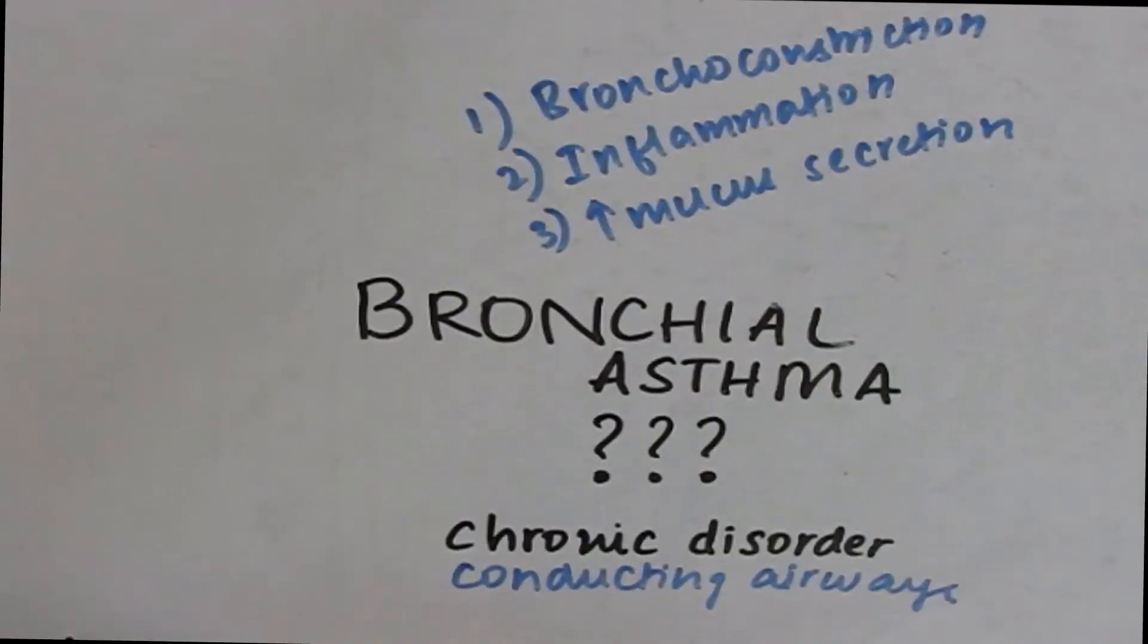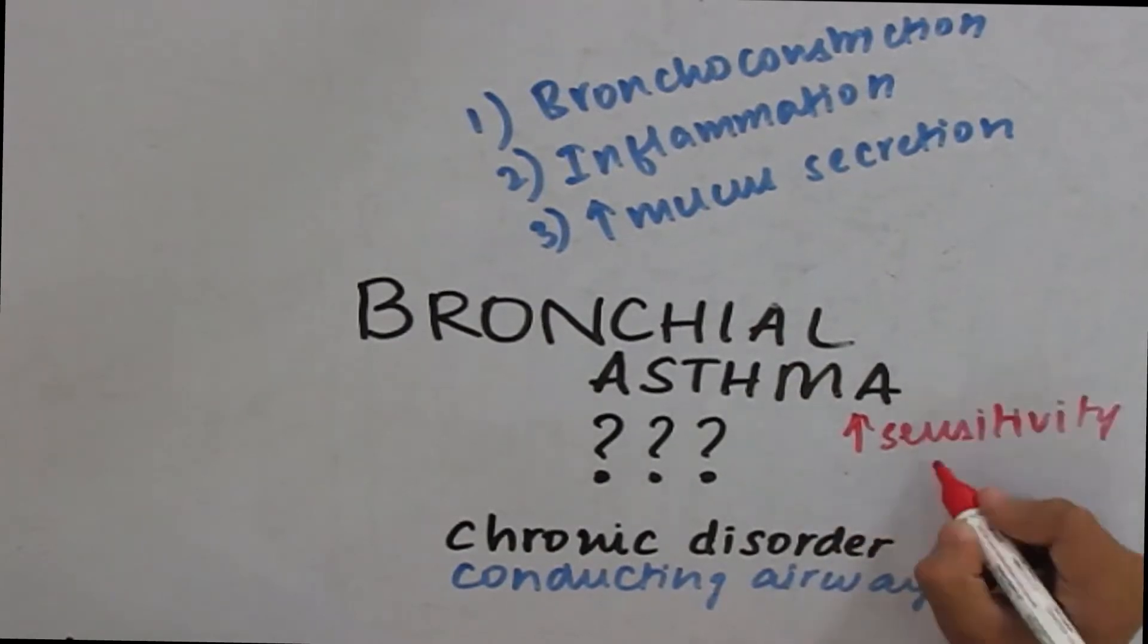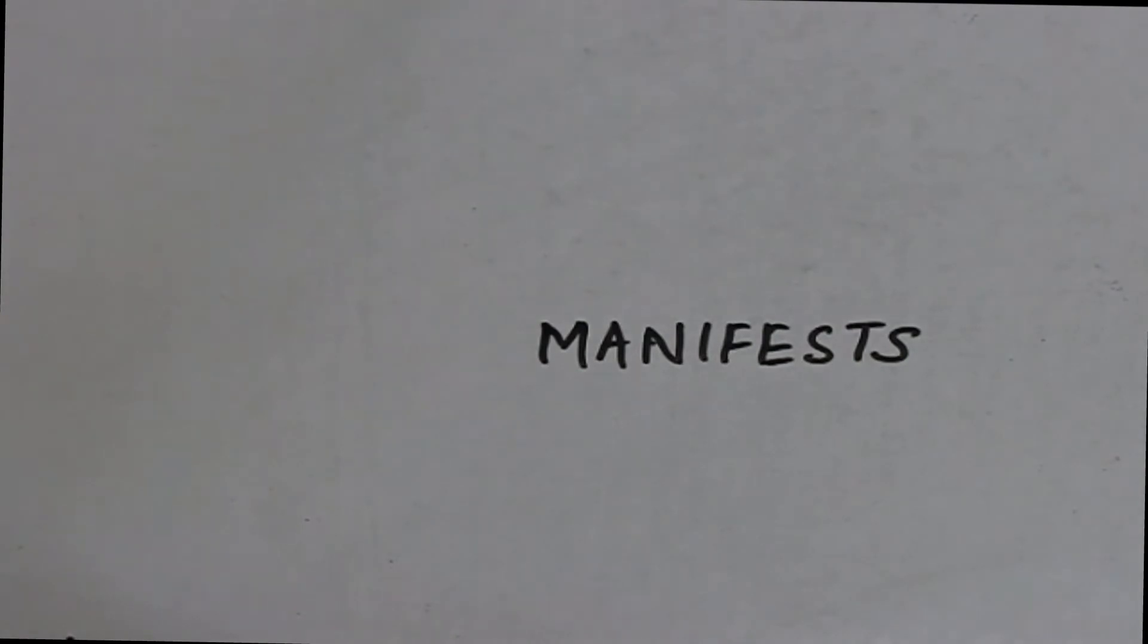So, what happens in bronchial asthma is there is increased sensitivity to a variety of stimulus. After we know the definition, let us know how bronchial asthma manifests.